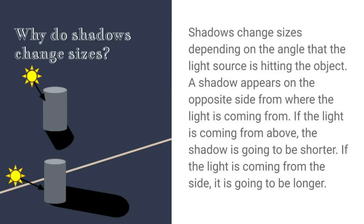If the light is coming from above, the shadow is going to be shorter. If the light is coming from the side, it's going to be longer. If you have a look at these two pictures, we've got two cylinders. One of them has the light coming from above, which is making the shadow shorter. And then we've got the light source coming from down on the side, which is making the shadow longer.